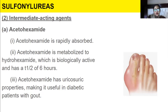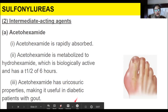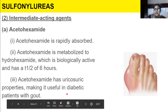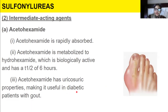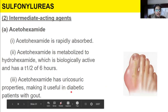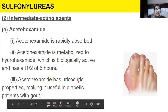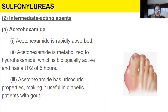Acetohexamide has uricosuric properties, meaning it increases the elimination of uric acid from the body. This makes it useful in diabetic patients who also have gout — a condition where uric acid accumulates within the joints, commonly in the feet. So acetohexamide can help eliminate that uric acid, making it beneficial for such patients.